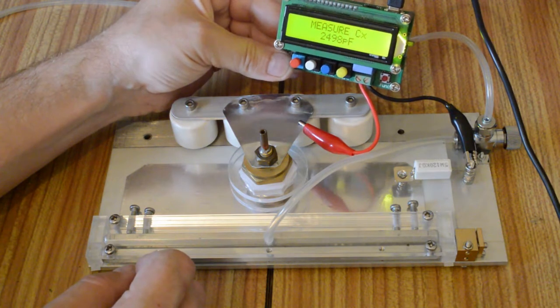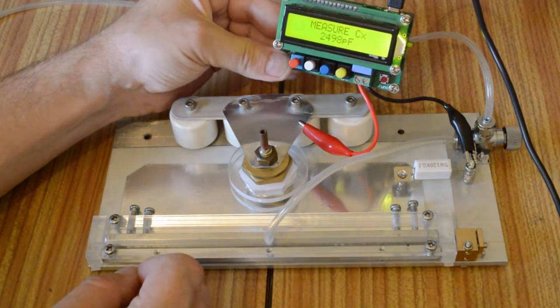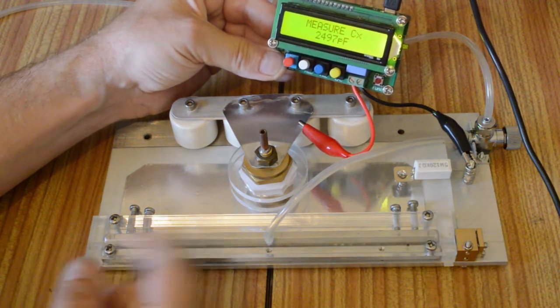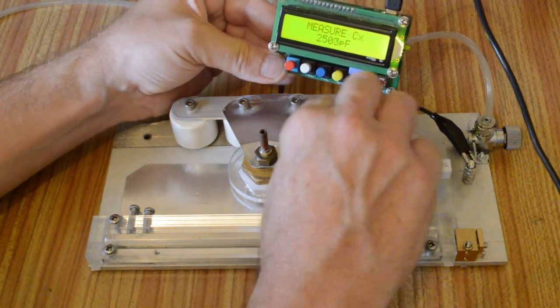We've got somewhere in the region of 2500 picofarads as the dumper. I think these are about 600 picofarads apiece for all four of them.